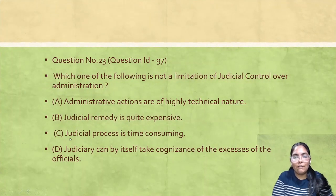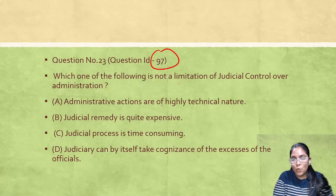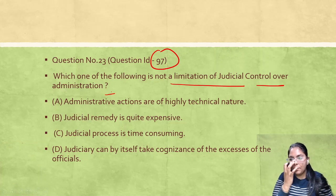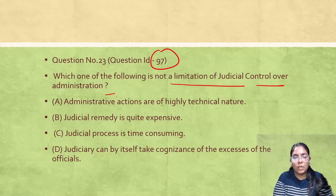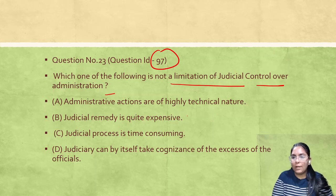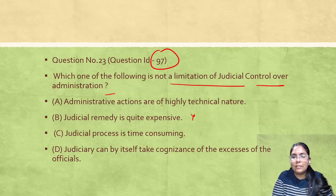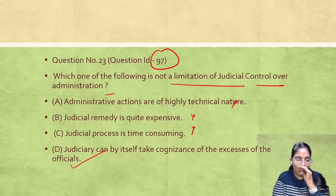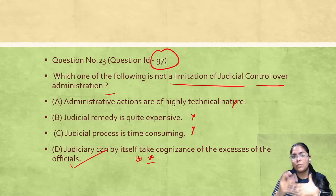Question ID 97: Which of the following is NOT a limitation of judicial control over administration? Administrative actions being of highly technical nature, judicial remedy being expensive, and judicial process being time-consuming — all of these are disadvantages. However, 'Judiciary can by itself take cognizance of excesses of officials' is a positive point, so it cannot be a limitation.